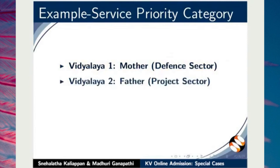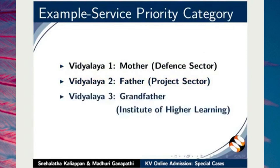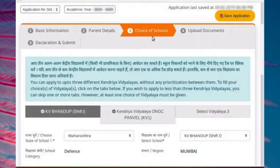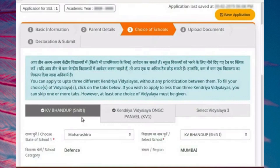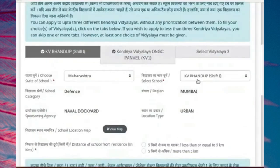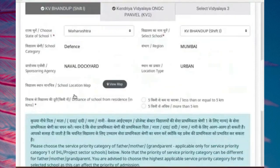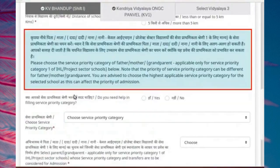For Vidyalaya 2, service priority of father, who is an employee of ONGC. For Vidyalaya 3, service priority of retired grandfather, who was an employee of Institute of Higher Learning. For Vidyalaya 1, as mother works in the defense sector, I have selected the school which is listed under defense category. Scroll down the page and read these instructions carefully before you start filling the service priority category.